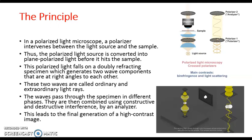The two waves passing through the specimen in different phases are combined using constructive and destructive interference. This can be observed where the second polarizer — that is, the analyzer — is located, and this leads to the final generation of a high contrast image.